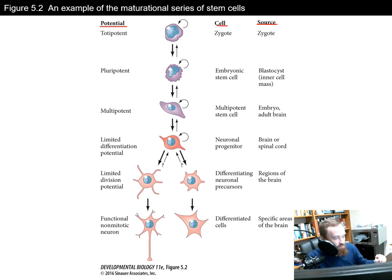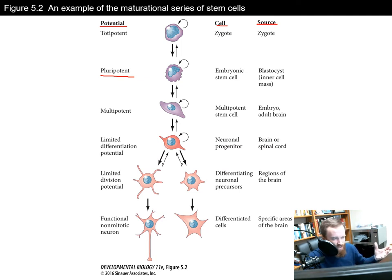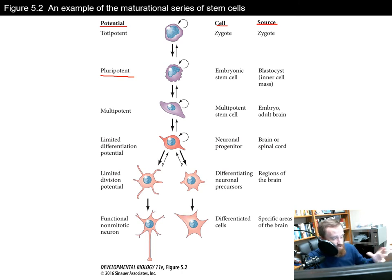From there, we have pluripotent. These are cells capable of producing all the cell types of just the embryo — so they can't form the placenta or yolk sac, but all cells within the embryo. When you hear about embryonic stem cells, these are those pluripotent stem cells capable of producing all the rest of the cells within the embryo and establishing the cell lines that stem cell research uses.